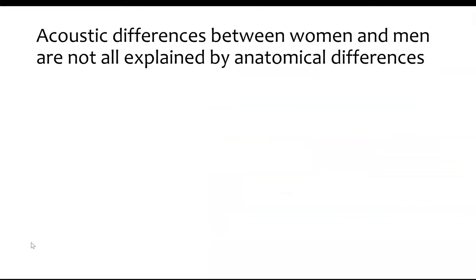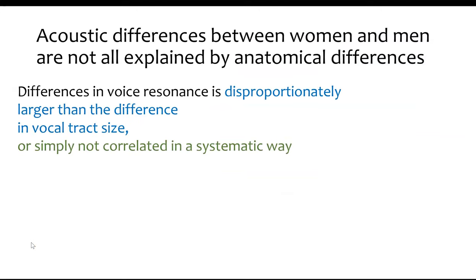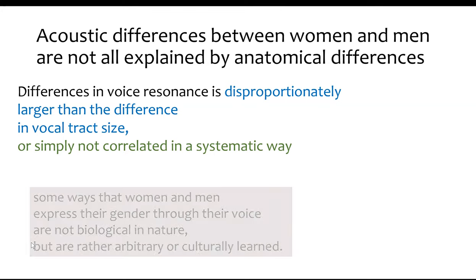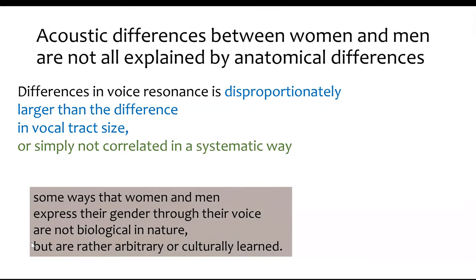One of the most interesting things you'll find is that not all the acoustic differences between women and men are explained just by anatomical differences. For example, if you look at the differences in resonant frequencies, they're disproportionately larger than the corresponding differences in actual vocal tract size. Those differences in voice resonances are not correlated in a systematic way with actual differences in people's sizes.